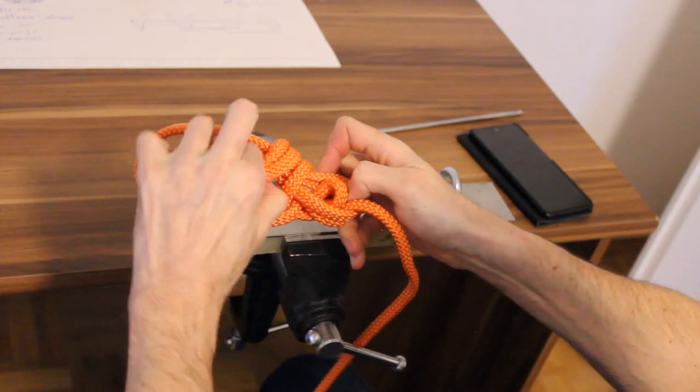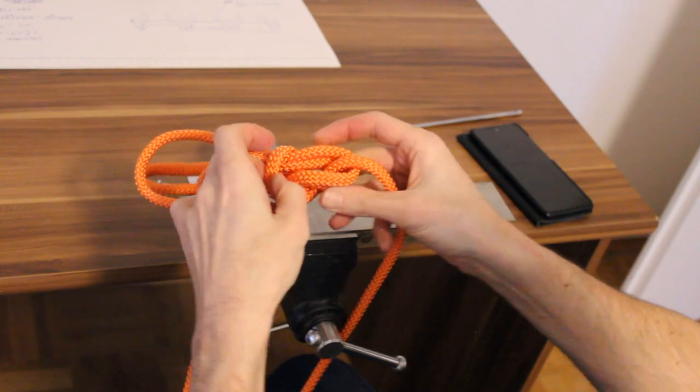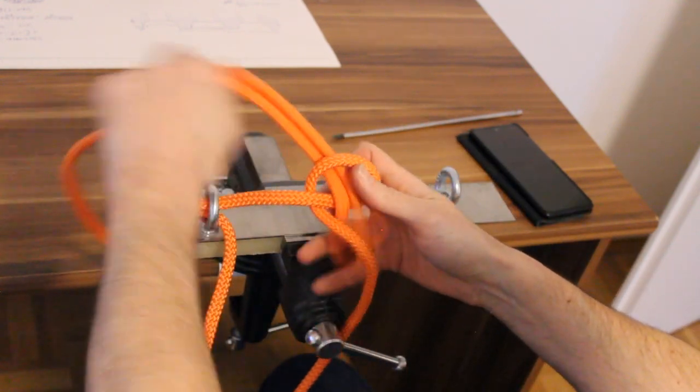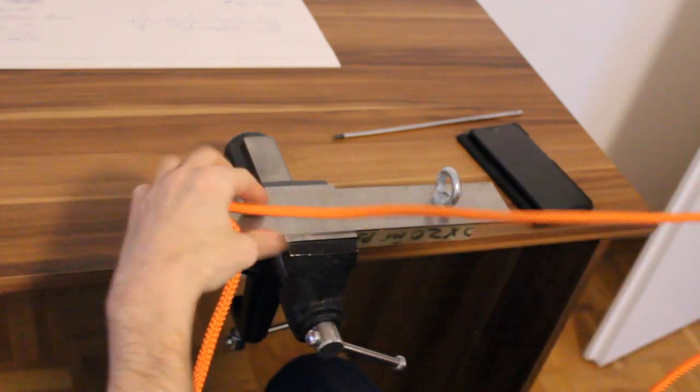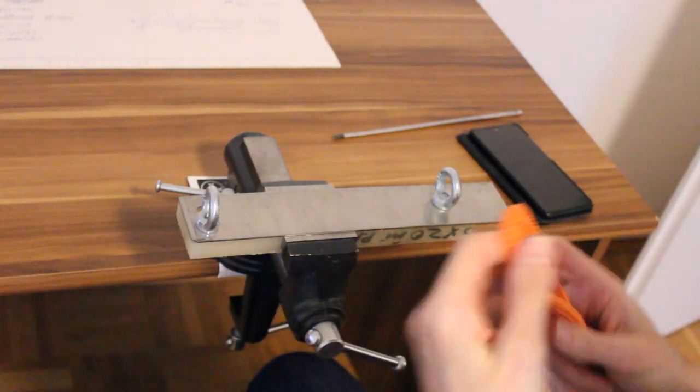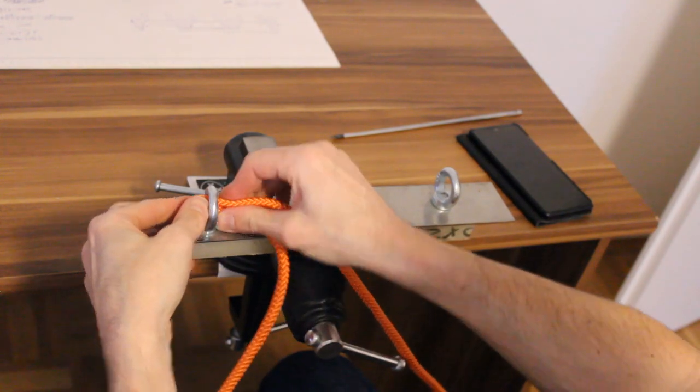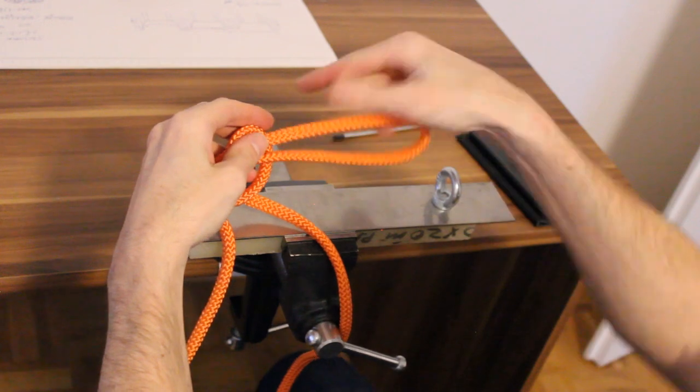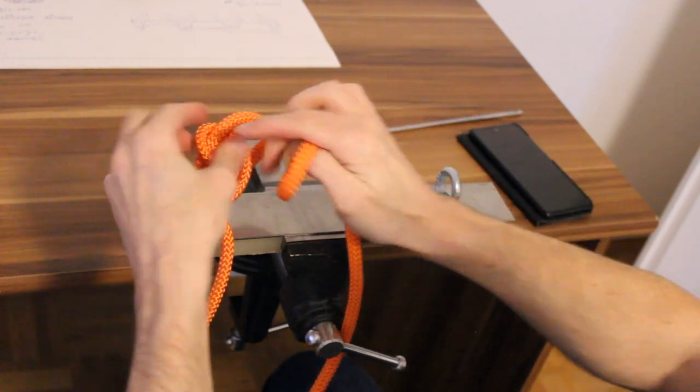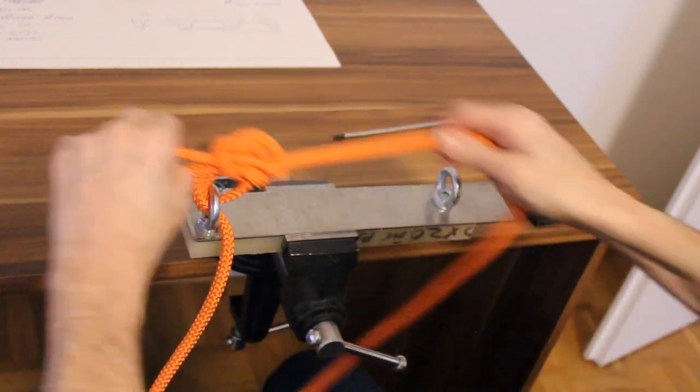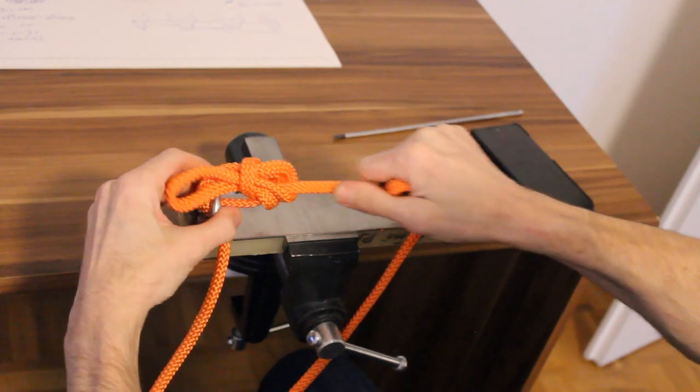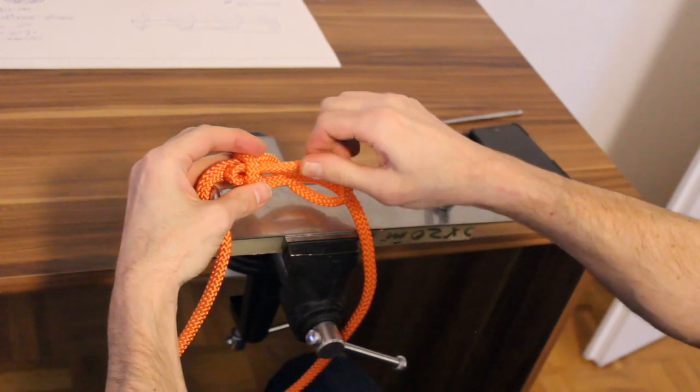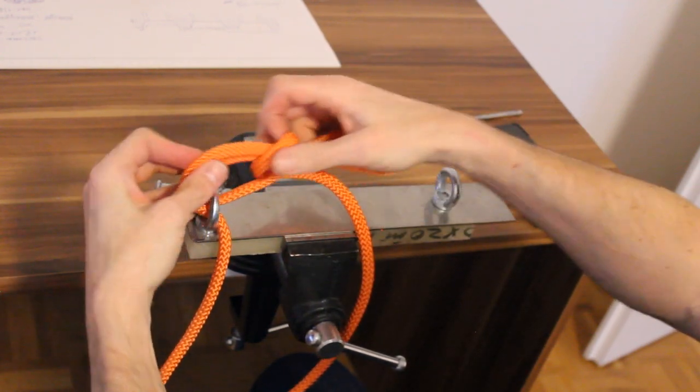There we go. And if you're just making a simple bowline this way, it's really quick. Go through, loop, up, round, and through, and done. Quite safe. Well, that's that.